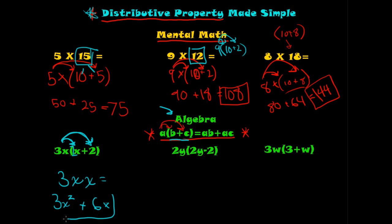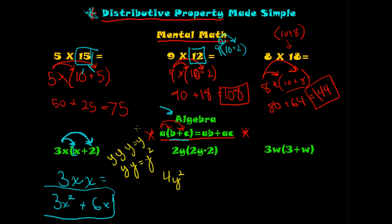So the answer is 3x squared plus 6x. For the next one: 2y times (2y minus 2). 2 times 2 is 4, and y times y is y squared, so 2y times 2y gives 4y squared. Then 2y times negative 2 — a negative times a positive is a negative — gives negative 4y.